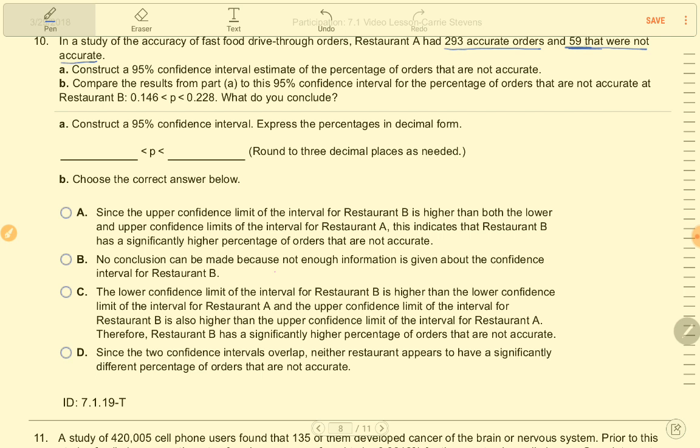I'm not sure which one until the question is posed, because if I'm estimating the population proportion of accurate orders, then this will be the successes. If I'm estimating the proportion of inaccurate orders, then this would be X. Part A, construct a 95% confidence interval estimate of the percentage of orders that are not accurate. So that means 59 is X.